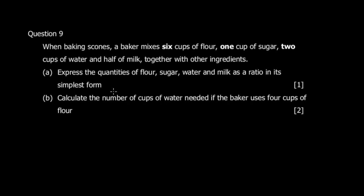Question nine: when baking scones, a baker mixes 6 cups of flour, 1 cup of sugar, 2 cups of water, and half a cup of milk, along with other ingredients. We're asked to express the quantities of flour, sugar, water, and milk as a ratio in simplest form.